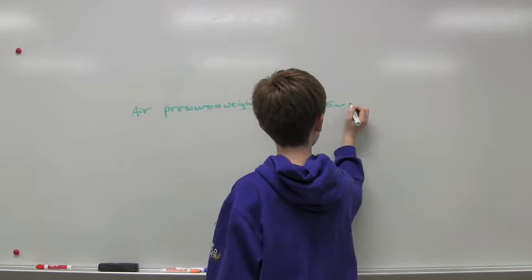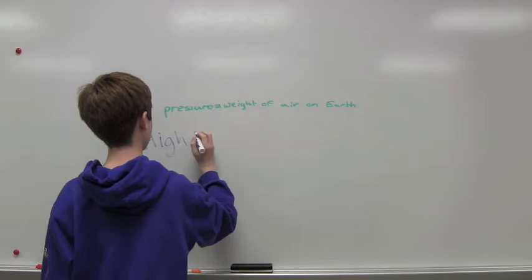Air pressure is the weight of air on Earth. High air pressure means more weight on Earth, and low air pressure means less weight.